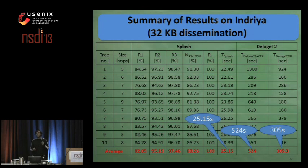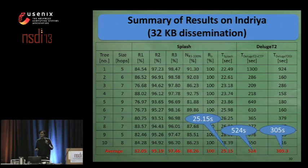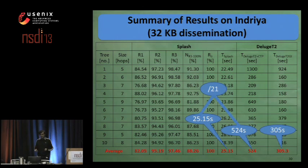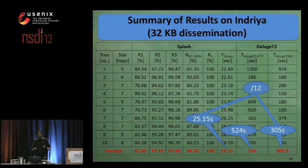The most important result is the dissemination time. SPLASH is taking only about 25 seconds, whereas Deluge T2 is taking more than 8 minutes in its first case, and more than 5 minutes in its second case. Compared to Deluge T2 coupled with an application, we reduce dissemination time by a factor of 21, and the reduction factor is 12 when compared to Deluge T2 running as a golden image.